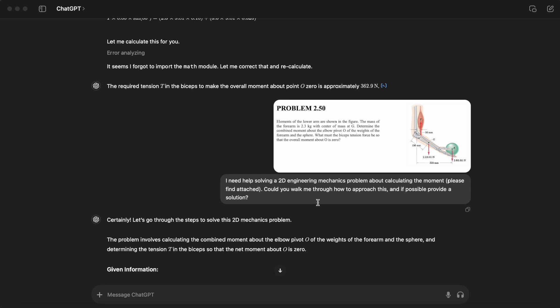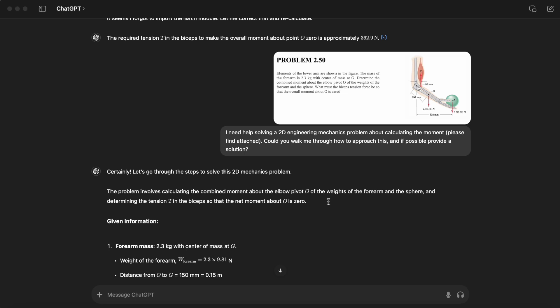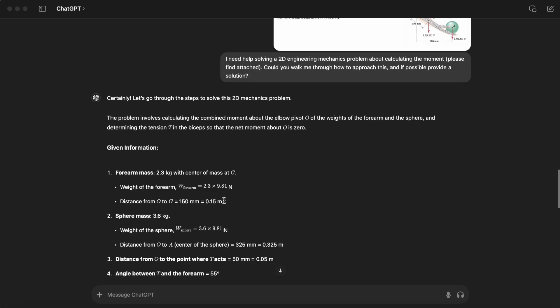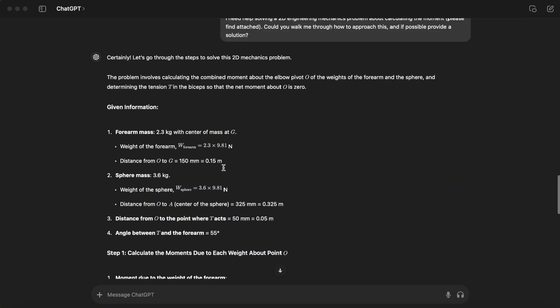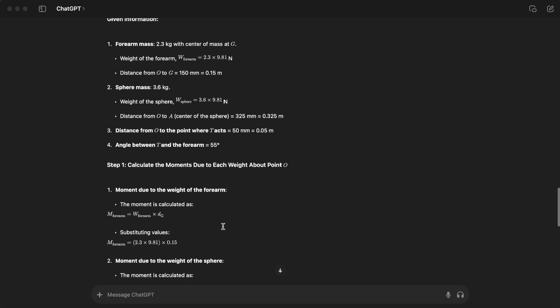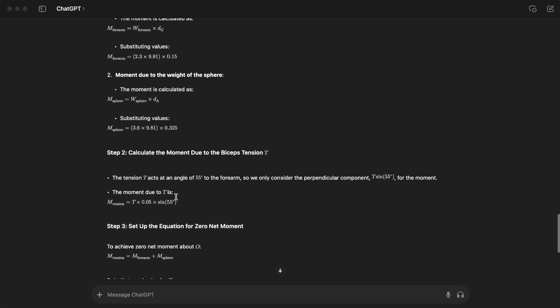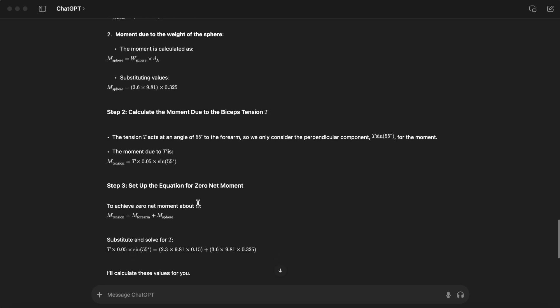I tried to use another prompt to see if I see any difference in the final answer. I asked, I need help solving a 2D engineering mechanics problem about calculating the moment, and attached the photo. Could you walk me through how to approach this and provide a solution? We have pretty much the same thing, that wrong distance here with no sine of 55 for the angle.